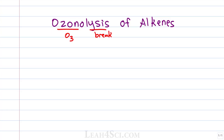You'll likely cover two or three types of ozonolysis reactions. Each one involves the reaction of an alkene with ozone; it's simply a question of what you use in the final step. The most common reaction is the reductive workup, where you start with ozone and follow with reductive conditions such as DMS (dimethyl sulfide, (CH3)2S) or zinc and acetic acid.